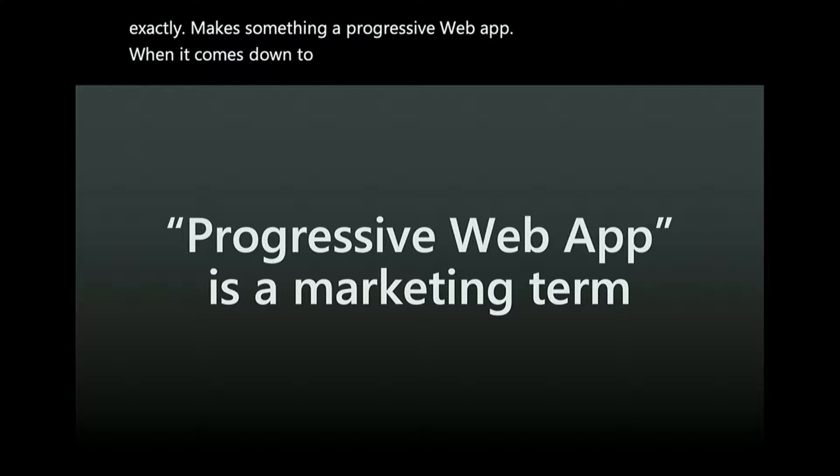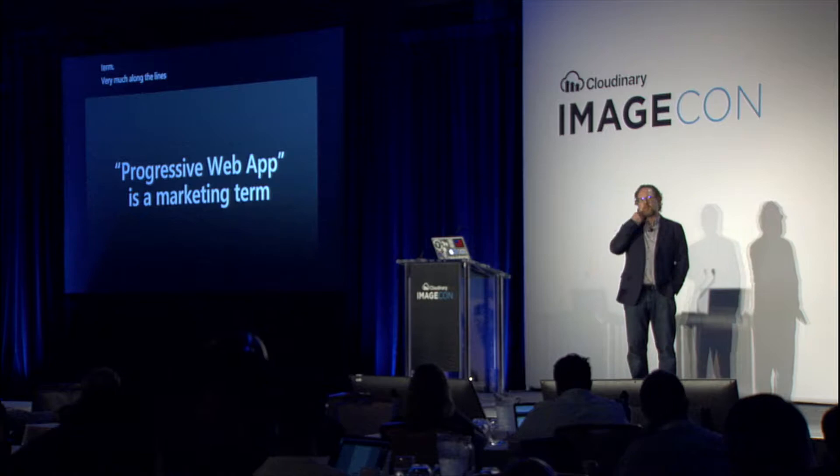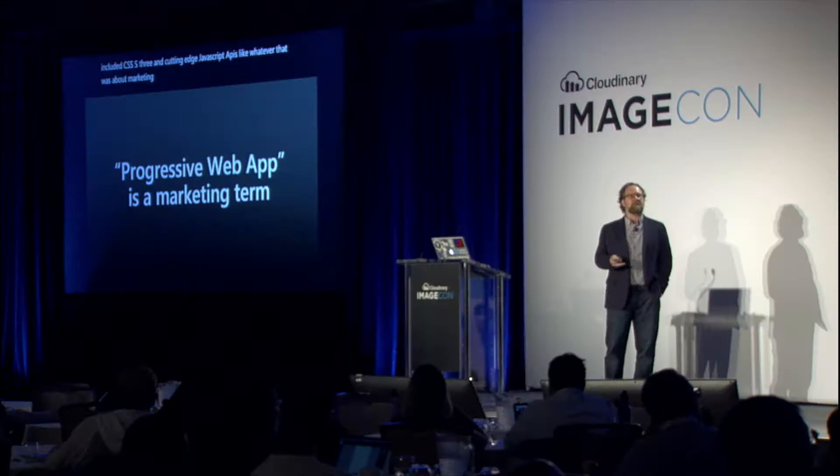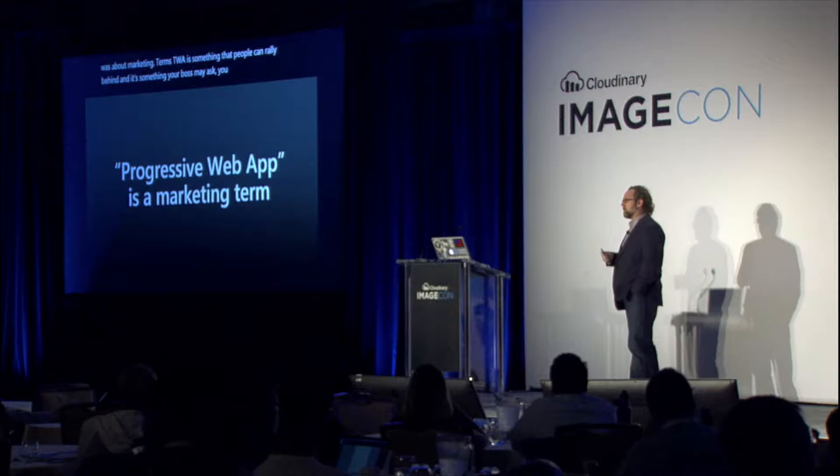When it comes down to it, the term progressive web app is a marketing term, very much along the lines of DHTML, or HTML5, which for some reason included CSS3 and cutting-edge JavaScript APIs. PWA is something that people can rally behind — something your boss or marketing team may ask you for. We can all talk about it, but we'll end up with slightly different versions of what exactly a PWA is.